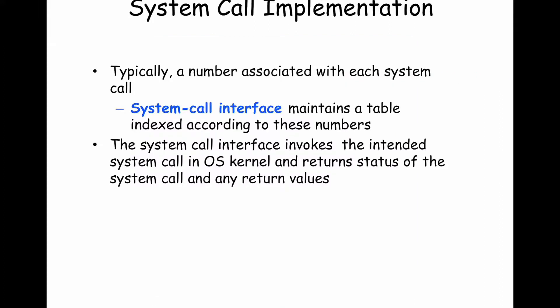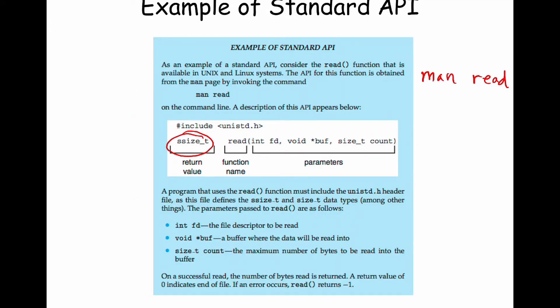System call implementation — you might wonder how this is implemented. We talked about the fact that you trap to the kernel, and the kernel performs the details in its runtime on behalf of that program. The user program gives the kernel the information it needs in the form of parameters. When you call read from your user process, the file descriptor, buffer pointer, and count are given to the operating system so it can perform the details of read on behalf of the calling process.